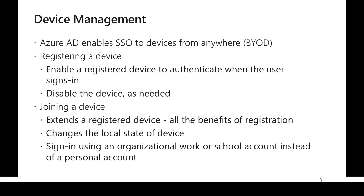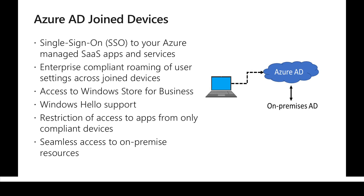Domain join changes the local state of the device based on organizational policies, which seamlessly helps in signing up the device with an organizational account. The organization has the right controls to wipe the data on the device as well. Once we have the device with Azure AD Join, we can use all the single sign-on capabilities and don't need to log in again and again. Whether it's Android, iOS, or a Windows device, it provides enterprise-compliant roaming features — even if we move across different networks, we can use internal applications seamlessly.